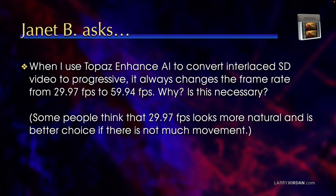Janet asks: When I use Topaz Enhance AI to convert interlaced SD video to progressive, it always changes the frame rate from 29.97 to 59.94. Why? Is this necessary? Some people think that 29.97 looks more natural and is a better choice if there's not much movement. The answer is, it really is in understanding what interlacing is that you'll understand why this frame rate change is necessary.